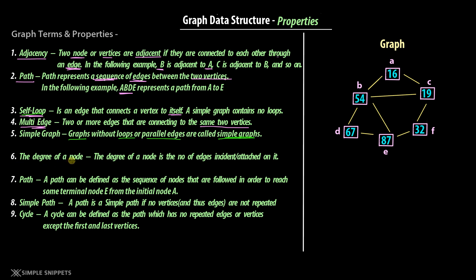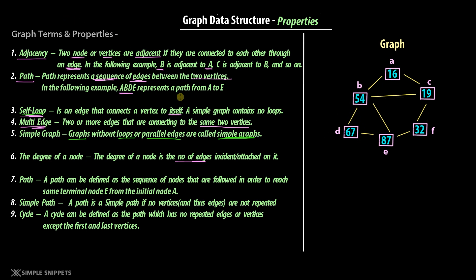The degree of a node is the number of edges incident or attached to it. The number of edges coming to or going from a particular vertex is basically the degree. In an undirected graph it is bi-directional. For example, looking at node D: it has two edges connected directly to it, so the degree of D is two. Similarly, the degree of B is four. In certain algorithms you need to figure out which vertex is connected to the most other vertices — that's where degree calculation is used.